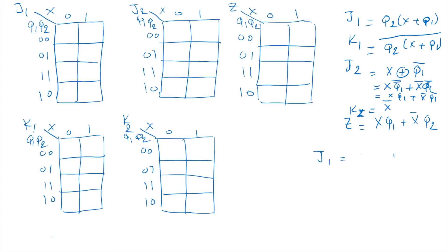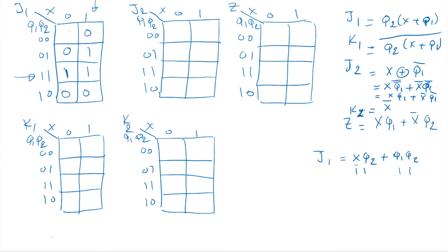For J1, which equals X·Q2 OR Q1·Q2, when X=1 and Q2=1 we place ones in those cells (the second column, bottom two rows). Then for Q1·Q2, both equal 1 means the Q1=1, Q2=1 row, so we place a 1 there as well. Everything else is zero.